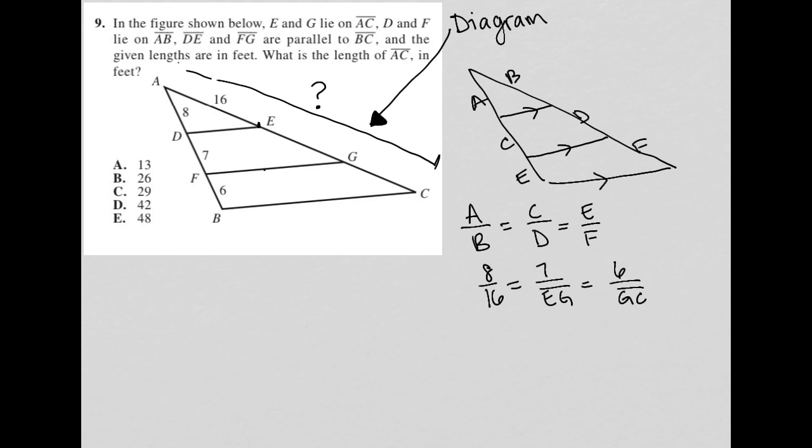So if we cross multiply using this proportion, two ratios equal to each other, I can say 7 times 16 is 112, and then I have 8 times EG. Divide both sides by 8 and EG would equal 14. So I know this is 14. Line segment EG equals 14.